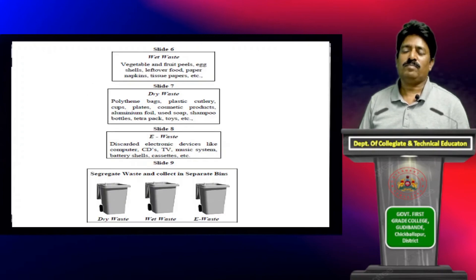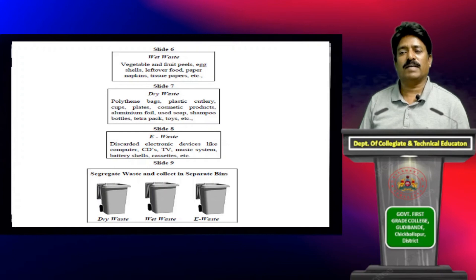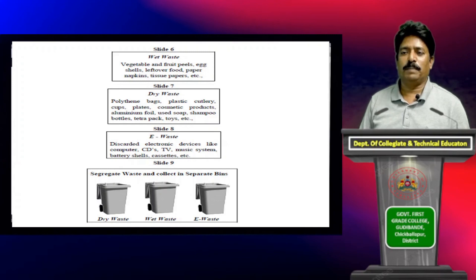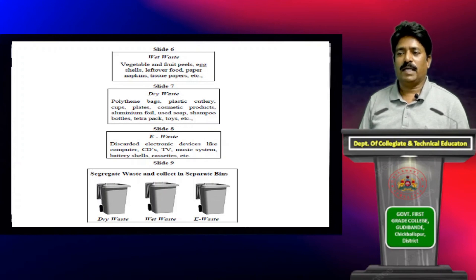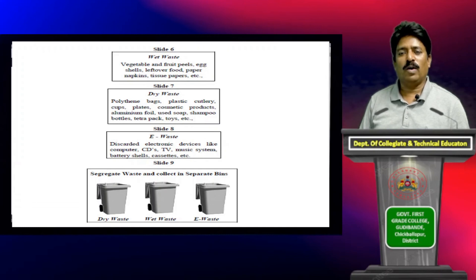Slide number six has the main heading 'Wet Waste,' with content listing: vegetable and fruit peels, eggshells, leftover food, paper napkins, tissue papers, etc. In the seventh slide, the title is 'Dry Wastes,' with content: polythene bags, plastic cutlery, cups, plates, cosmetic products, aluminum foil, used soap, shampoo bottles, tetra packs, toys, etc.